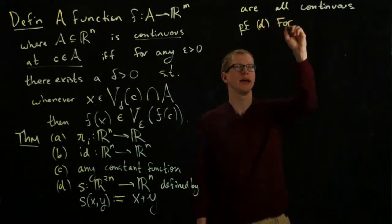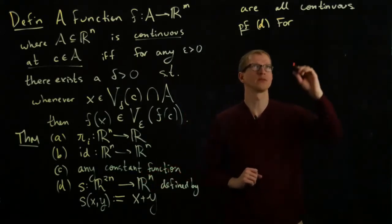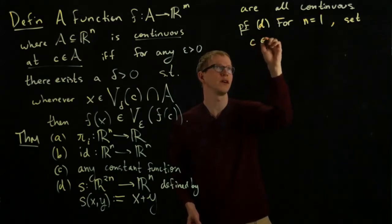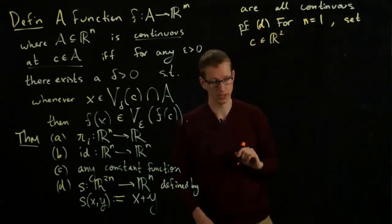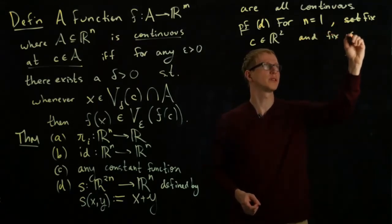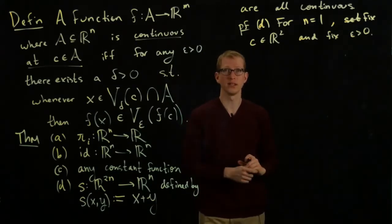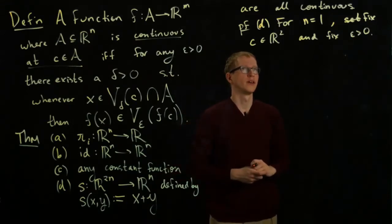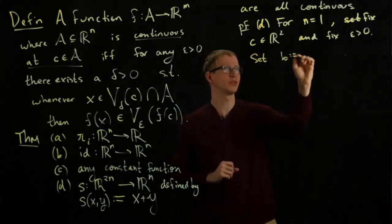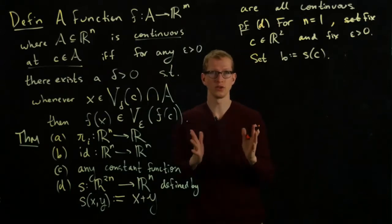So for D, it's simple to just first consider the case where N equals 1, where I'm just summing two ordinary numbers. So for N equals 1, fix C to be some element in R^2 and fix epsilon to be greater than 0. I have to produce for you a delta satisfying this condition where F is the function S. So it helps to just simplify notation a little bit. Set B equal to the image of C.